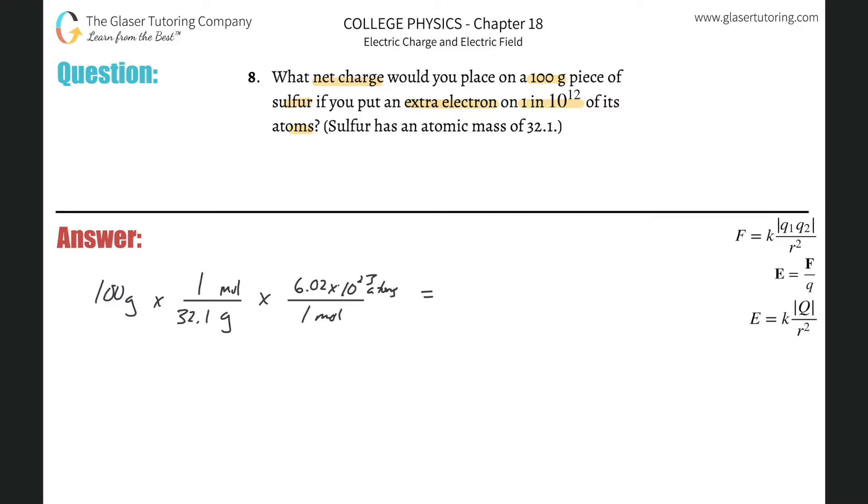So 6.02 times 10 to the 23rd multiplied by 100 and then divide that by 32.1. And we get a value of about 1.8, so I'm just going to do 1.875 times 10 to the 24th atoms of sulfur. This is how many atoms we have.